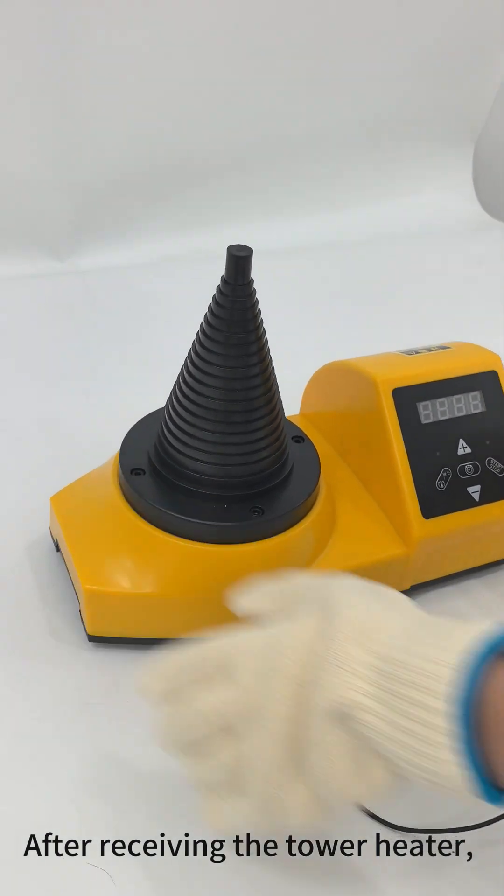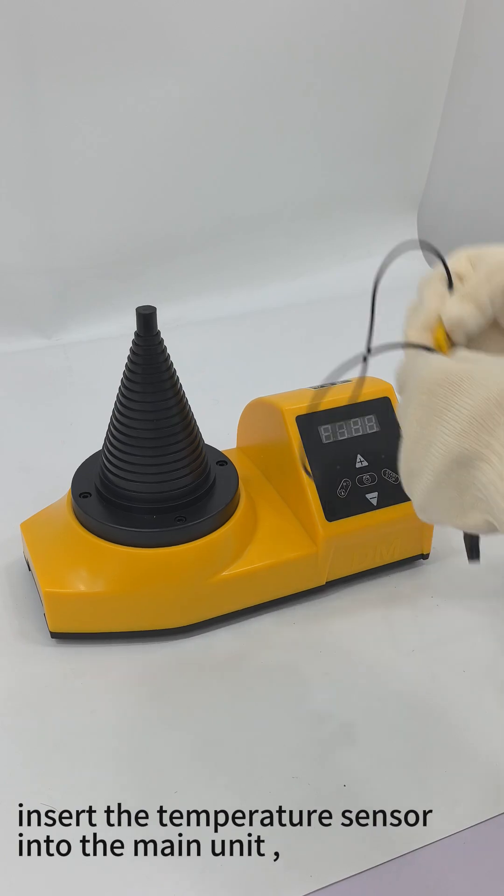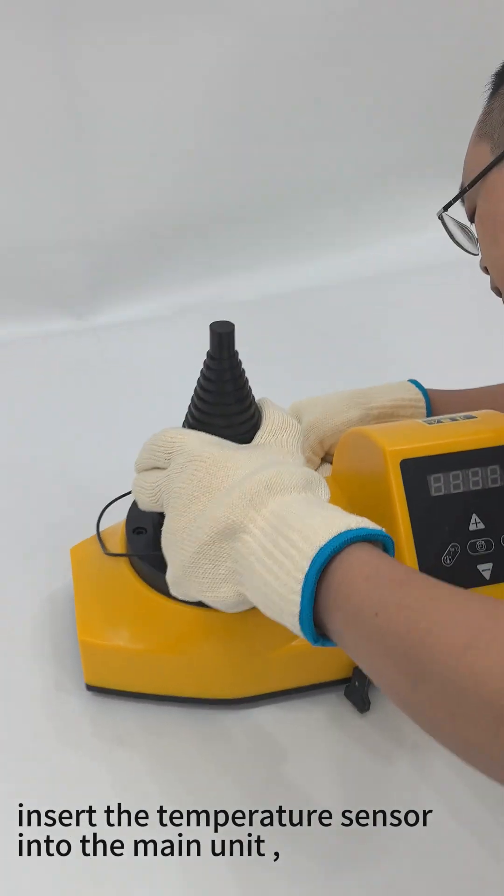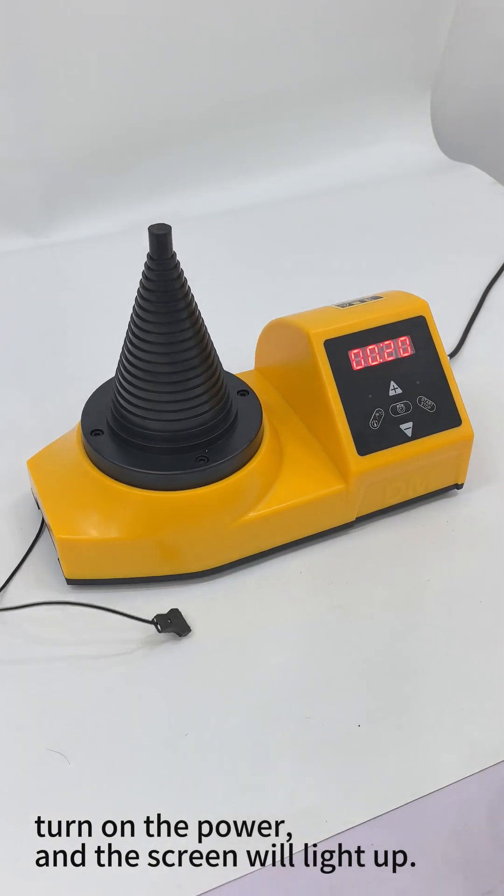After receiving the tower heater, insert the temperature sensor into the main unit. Turn on the power and the screen will light up.